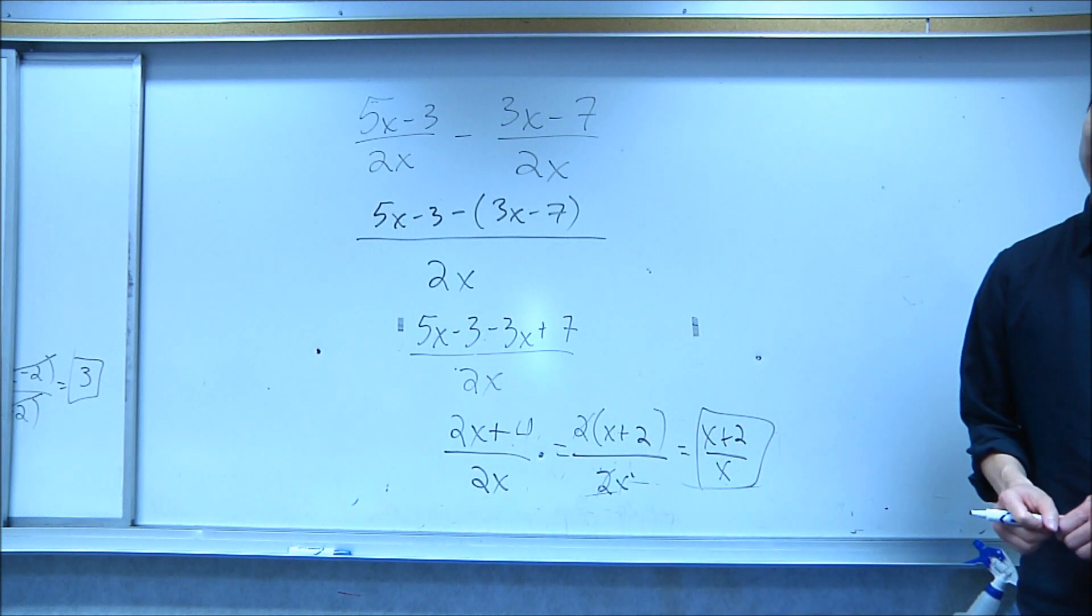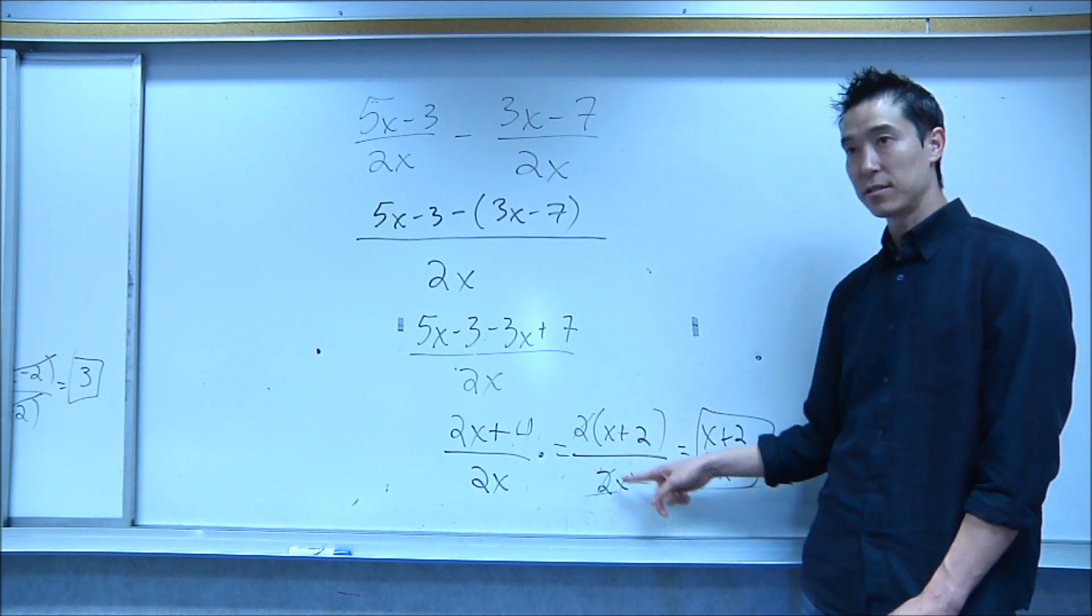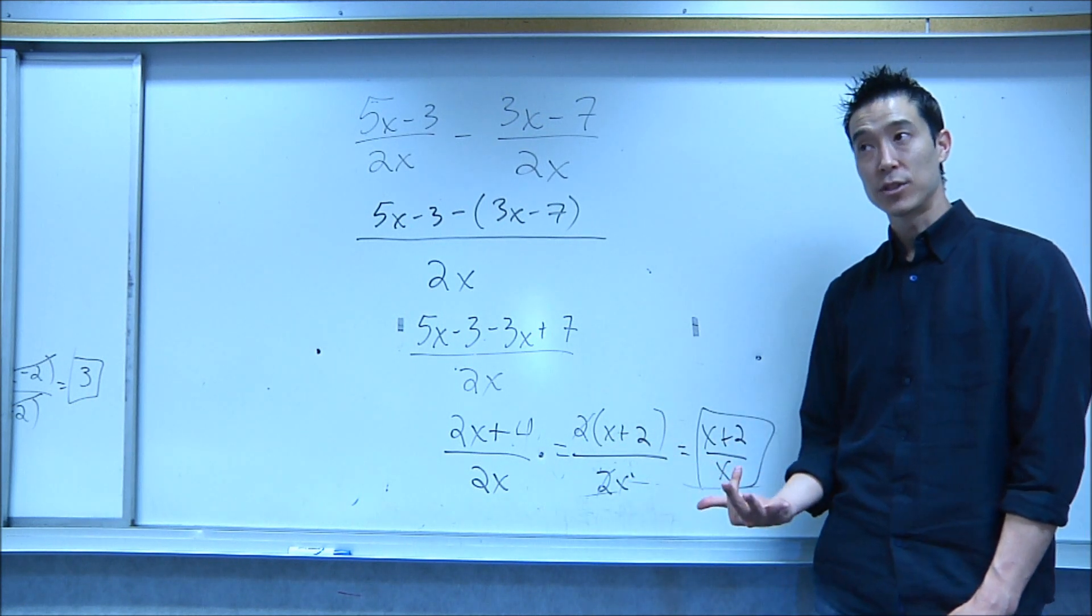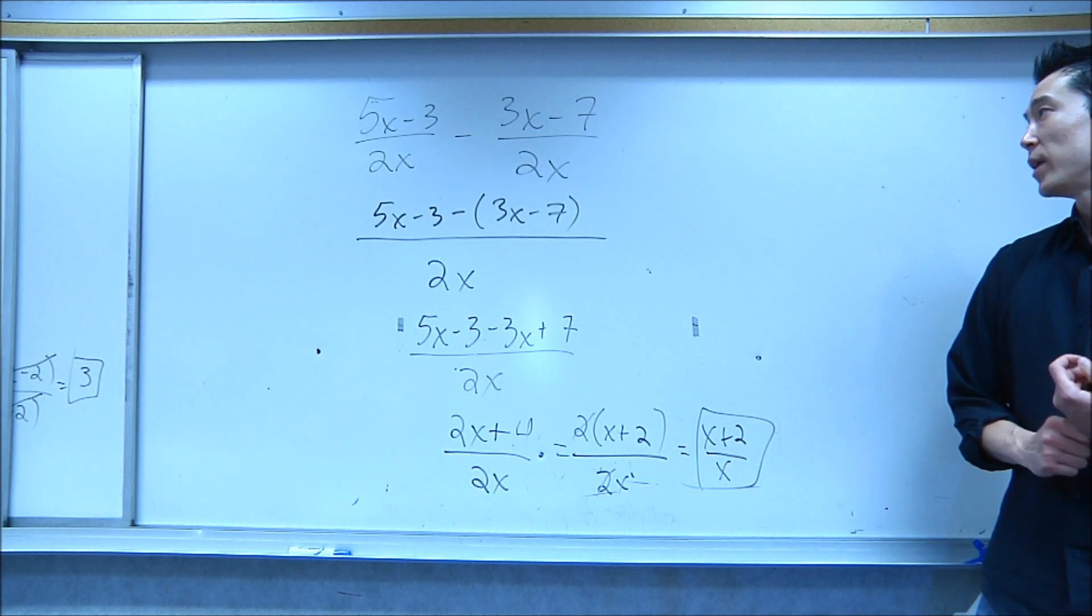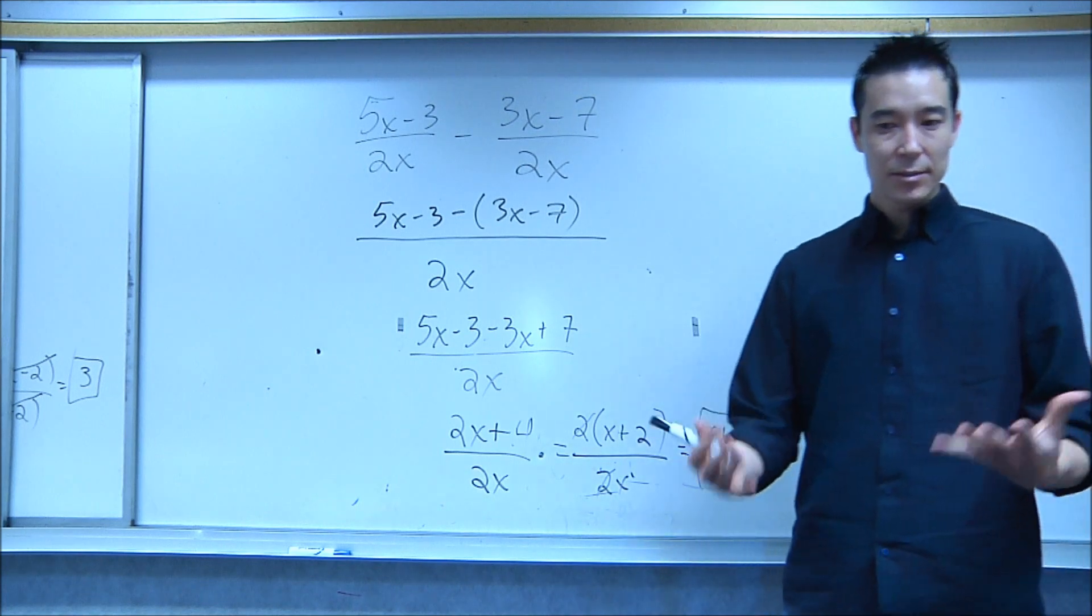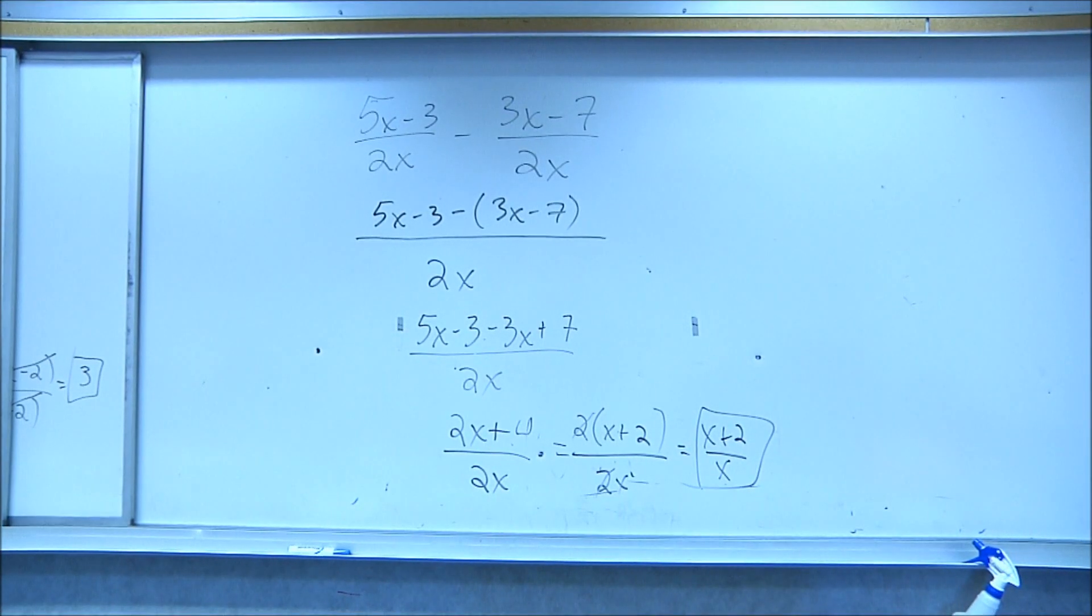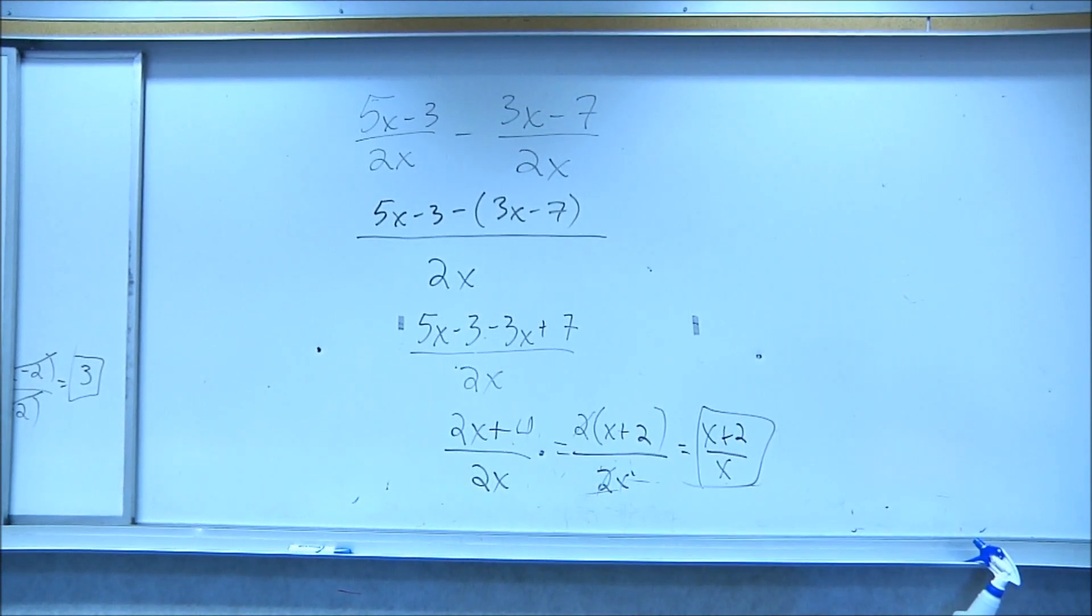Don't ever reduce terms. You can only reduce factors. So you have to factor, which is all of chapter 6. Lovely 100 pages on how to factor. Any questions? And we are done with lectures for this whole class.